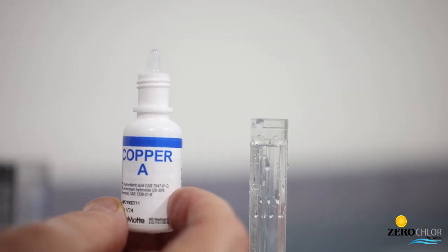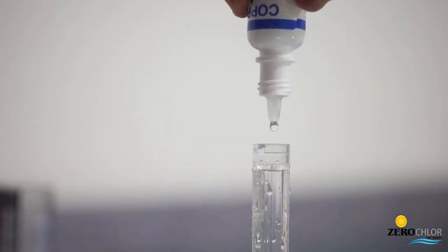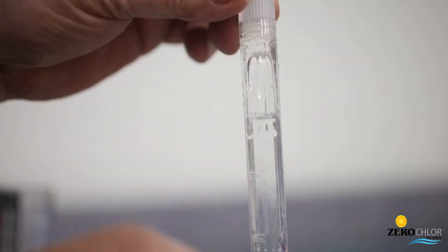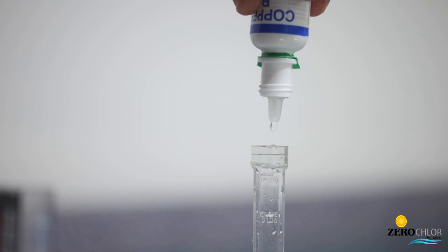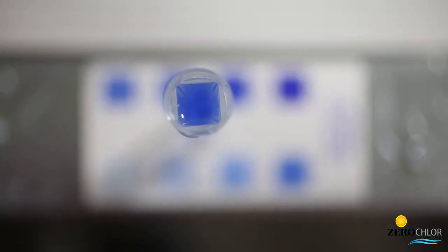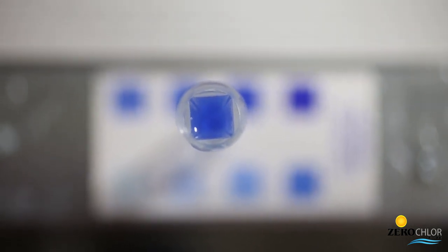I prefer to start by testing the copper levels. Fill the sample tube to the 10 milliliter line, add five drops of copper A, invert to mix, then five drops of copper B and mix. Wait three minutes. After three minutes, compare the blue color in the tube to the color chart. Find the color on the chart that matches the sample.